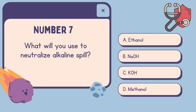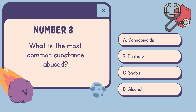Number 7: What will you use to neutralize an alkaline spill? A. Ethanol, B. NaOH, C. KOH, D. Methanol. The correct answer is B, NaOH.